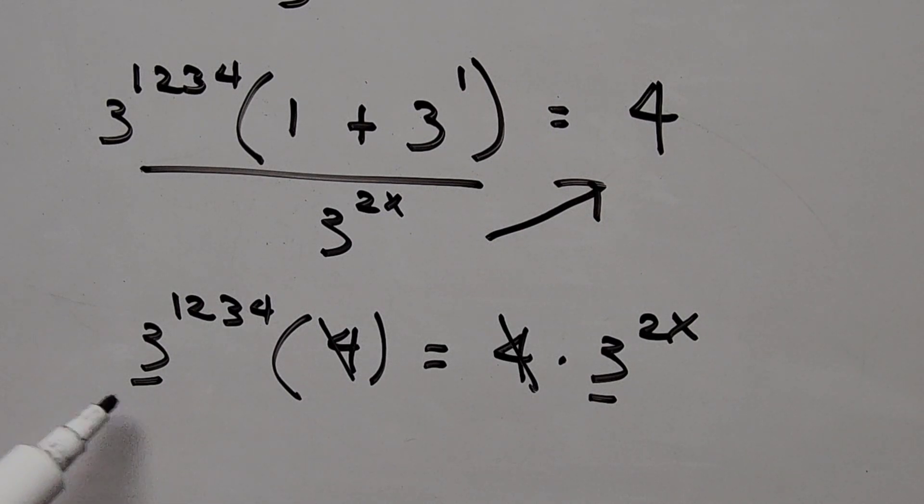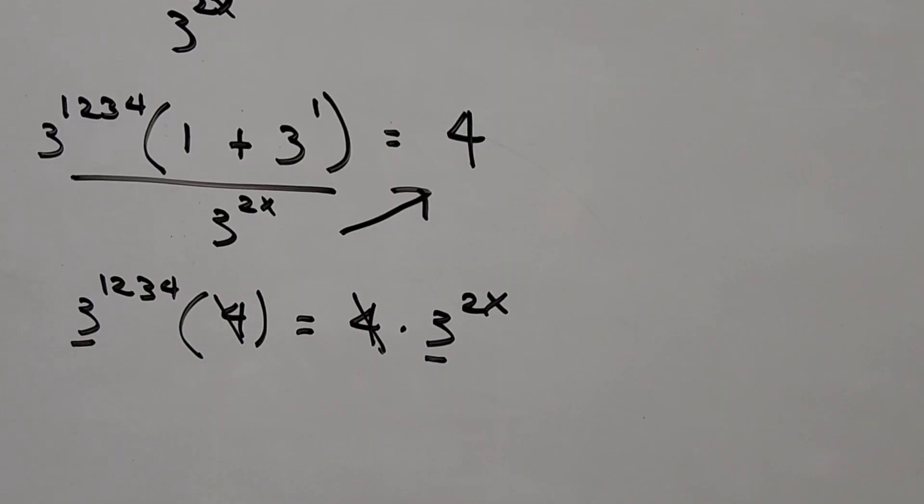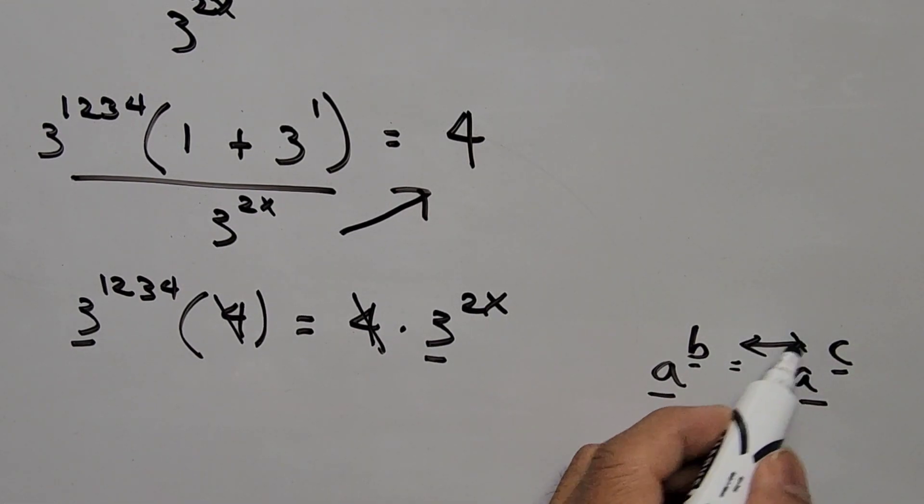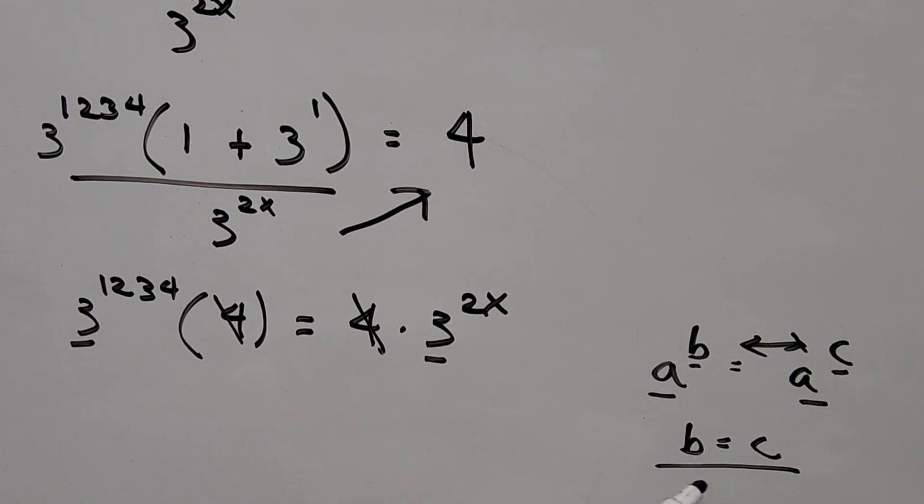So from here we have the same base but different exponent. So from here we are using the exponent rule using a formula: a raised to b is equal to a raised to c. The base are the same, a and a, but the exponents are different, b and c. We can tell that b and c are equal. So we are equating the exponent on both sides of the equation.